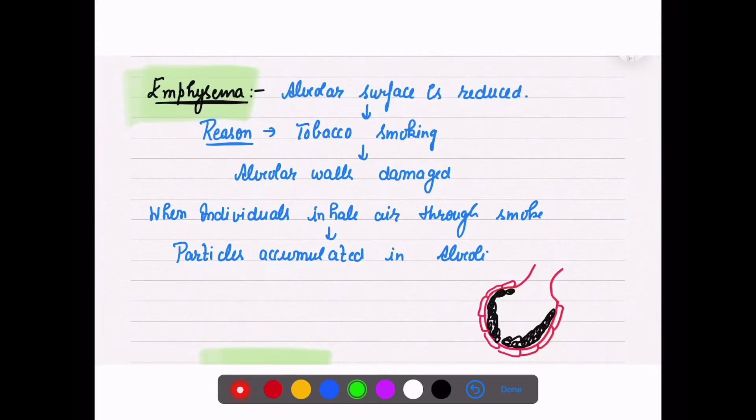Then is emphysema. Emphysema is mostly observed in people who smoke. What happens in this is that alveolar surface is reduced. The alveoli is covered with epithelium. When a person smokes, particles from smoke or tobacco get inside, accumulating in the alveoli.